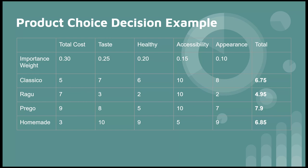Okay, so for product choice decision example, we're going to also mention the videos that we just watched. We compared Classico, Ragu, Prego, and then just homemade pasta sauce. So we did things that people would consider as in total cost, the taste, health, how accessible it is, and appearance.